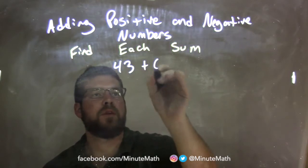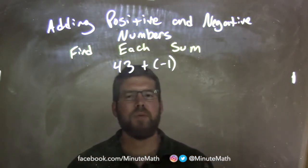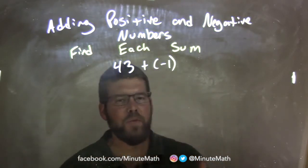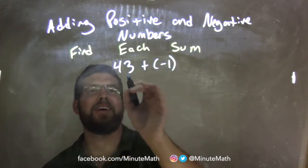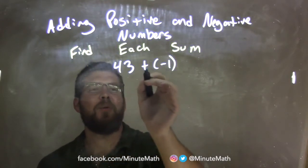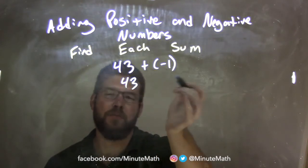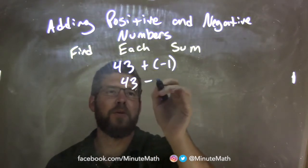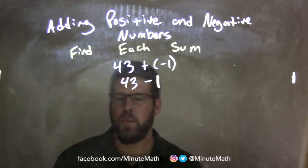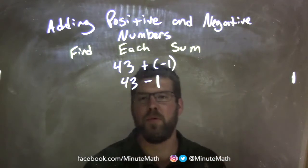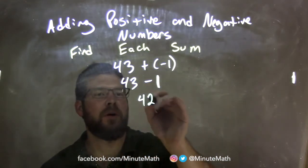43 plus a negative 1. Since we have plus a negative, we can do minus the positive 1. And with 1 it becomes simple: 43 minus 1 is just 42.